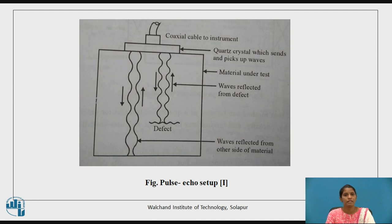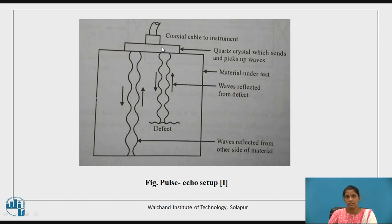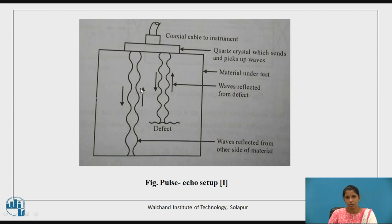This is the setup for the pulse echo method. There is a coaxial cable connected to the instrument and a quartz crystal which sends and picks up the ultrasonic waves. If there is no defect present, the wave will strike the other end of the specimen and reflect back. If the specimen has a defect, when the rays are inserted, they will penetrate into the defect and then reflect back, and the time difference between striking and returning is calculated. In this way, we can find out the time and distance to the defect.